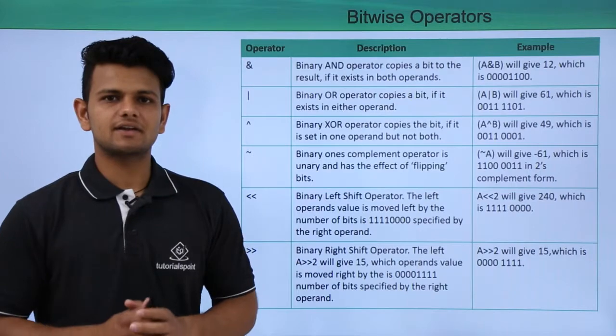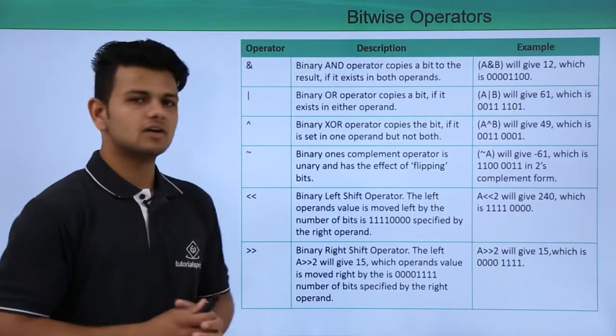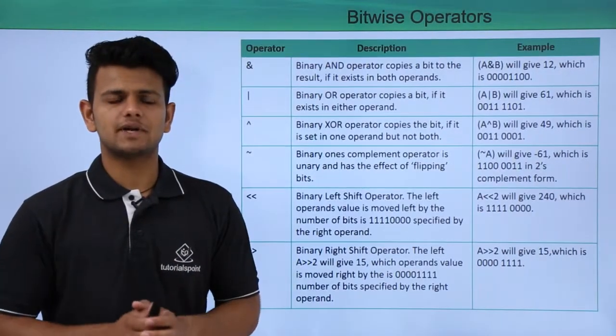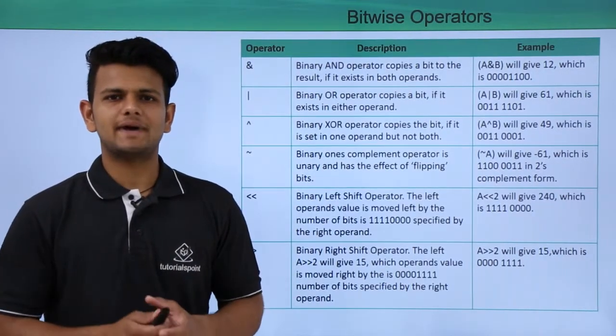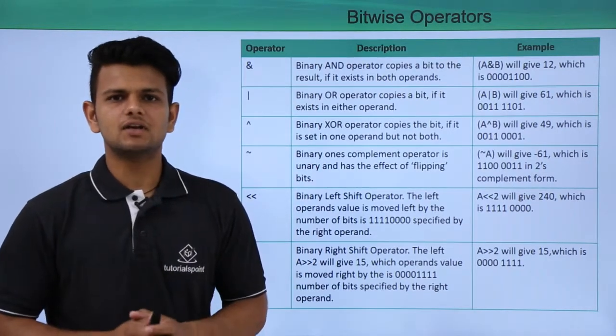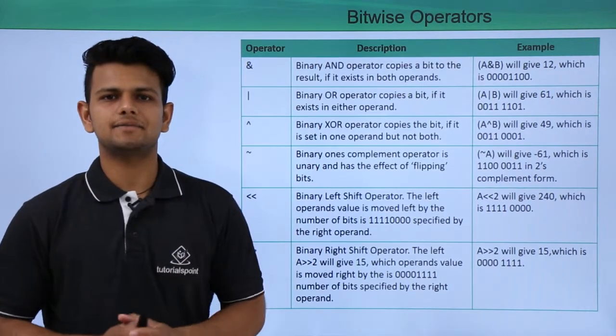The fourth operator is a one's complement operator which does the one's complement of a number. The fifth operator is a binary left shift operator which shifts the value to binary left and the last operator is a binary right shift operator which shifts the value to binary right.